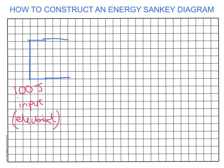We're going to pretend that 40 joules is lost simply as heat. The length of the arrow going down doesn't matter — it's the width. So let's have a start of an arrow coming down here. If each square is 20 joules, then 40 joules would be two squares wide. We just draw an arrow coming off that is two squares wide, which represents 40 joules. So 100 joules came in, but this is a 40 joule loss of energy via heat.